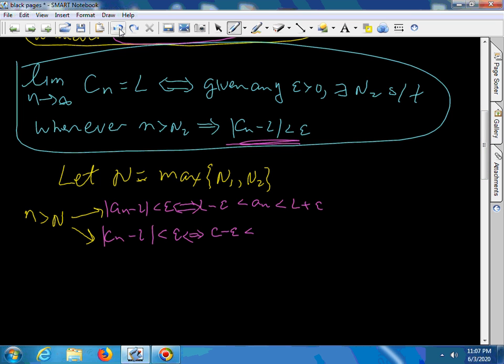And then everything comes together. L minus epsilon, cN is in between L minus epsilon and L plus epsilon. And this is if N is bigger than capital N.